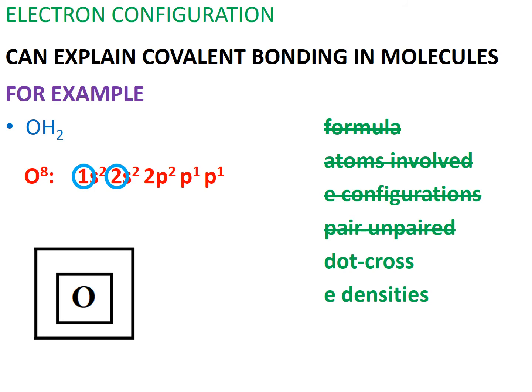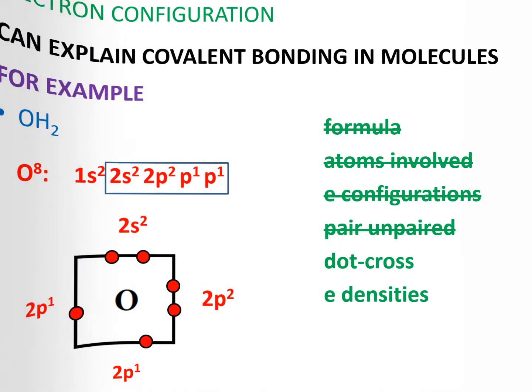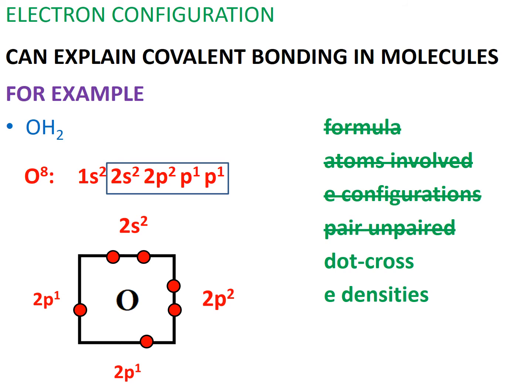Let's start with the central atom, oxygen, which has two shells. Remember, we only need to show the outermost valence shell, because it is the only shell whose electrons participate in any covalent bonding. In oxygen's valence shell, there is a 2s orbital occupied by two electrons, one 2p orbital also occupied by two electrons, and two 2p orbitals each containing an unpaired electron.